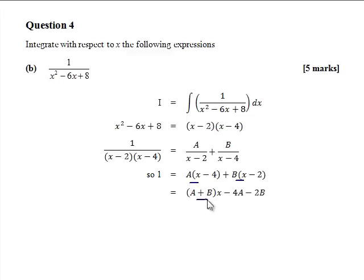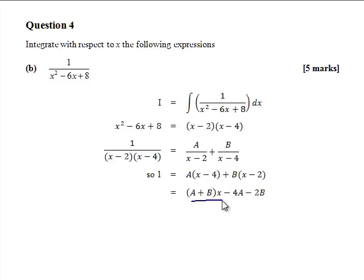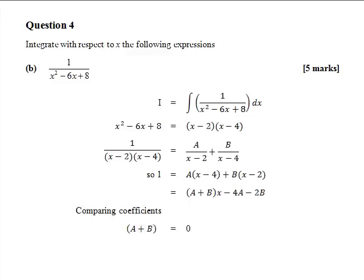Expanding the brackets and collecting terms: the x terms give A plus B, and the constant terms give minus 4A minus 2B. Comparing coefficients of x on both sides — the left hand side has no x terms — so A plus B equals 0, meaning A equals minus B.